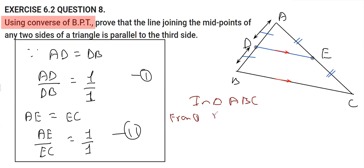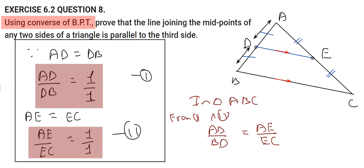We can say that AD over BD is equal to AE over EC. Because these two ratios are equal to one, they can be equated.